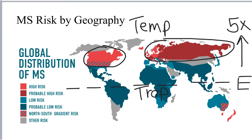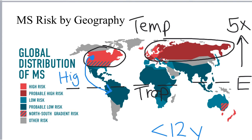One important thing to note about this distribution of risk by geography is that it depends where an individual grew up before the age of 12 years old. If a child grows up in a high-risk area and subsequently moves to a low-risk area after the age of 12, they still retain that higher risk of developing MS. And the reverse is also true: if a child grew up in a low-risk area and subsequently moves to a higher-risk area after the age of 12, they retain that lower risk from the area in which they grew up.